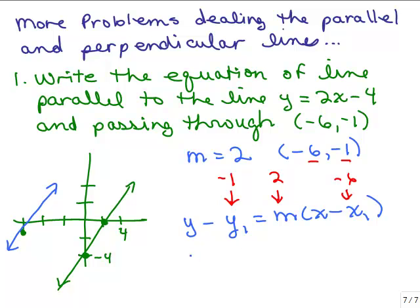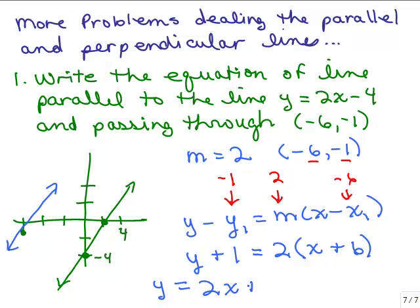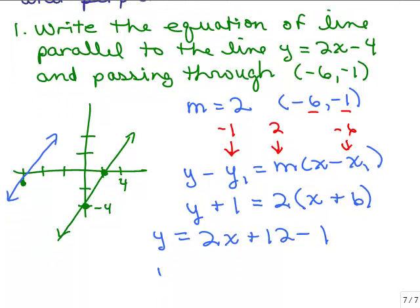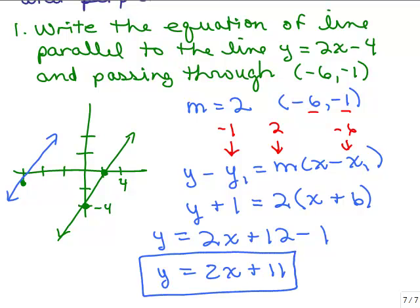So we have y minus negative 1, which is y plus 1, equals 2 times x minus negative 6, which is x plus 6. Solving for y, we distribute: 2x plus 12 minus 1. So we get y equals 2x plus 11. That looks like the equation.